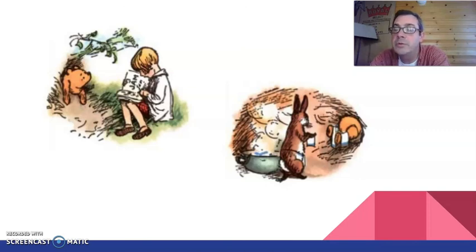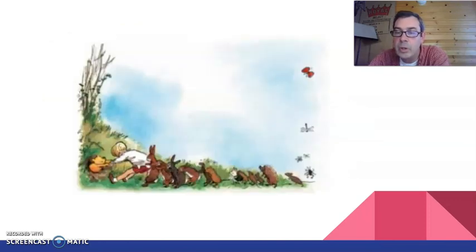So for a week, Christopher Robin read that sort of book at the north end of Pooh. And Rabbit hung his washing on the south end. And in between, Bear felt himself getting slenderer and slenderer. And at the end of the week, Christopher Robin said, now. So he took hold of Pooh's front paws. And Rabbit took hold of Christopher Robin. And all Rabbit's friends and relations took hold of Rabbit. And they all pulled together.